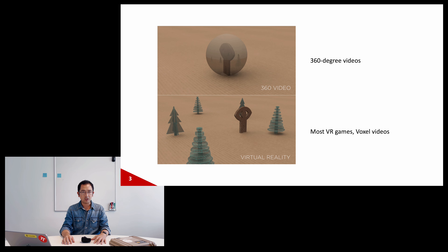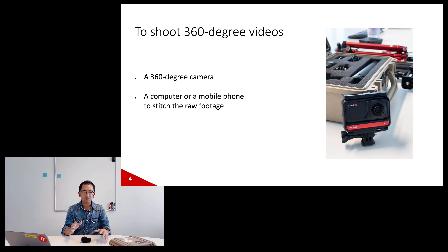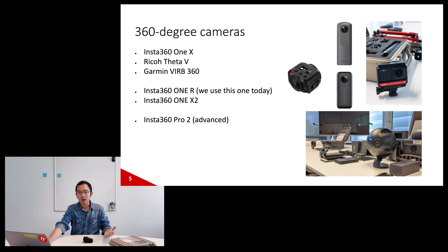You'll ask: how can I make 360 videos? Well, 360 video is different from VR games — you don't need a lot of coding or working in game engines. They are produced using a 360 camera like the one I have here, which I use a lot during my research and production. You also need a computer or mobile phone to stitch the raw footage — I'll talk more about why there's a stitching step. The 360 camera market has lots of different options.